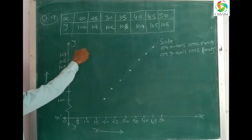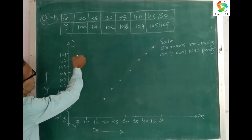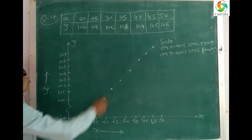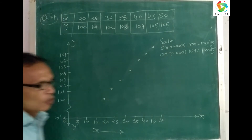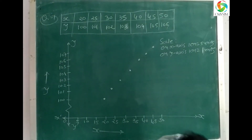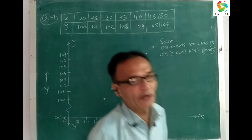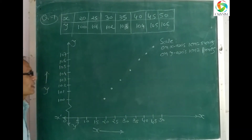If x is equal to 20, 25, 30, 35, 40, 45, 50, then y is equal to 100, 101, 102, 103, 104, 105, 106. So we have correlations between x and y — let's see how to draw the diagram.